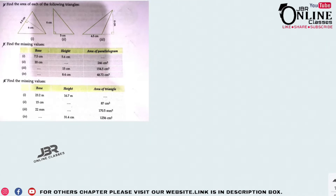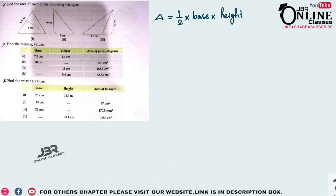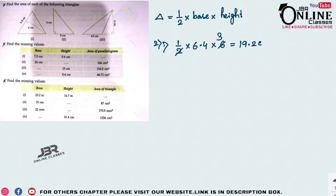Sum number 2: find the area of each of the triangles. The formula is ½ × base × height. For the first one, base = 6.4 and height = 6.4, so ½ × 6.4 × 6.4 = 19.2 cm² as the area.